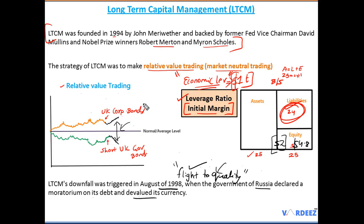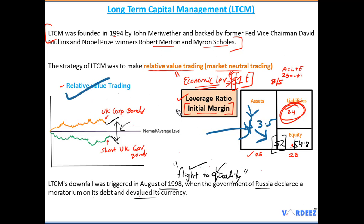The losses of LTCM spilled over into broader US financial markets, nearly causing a systemic crash. To prevent further losses, a group of banks injected $3.5 billion in equity. Notably, the banks that took over LTCM made a great deal of money from those same trades once conditions stabilized. The trades based on the models were not fundamentally wrong — the timing of the crisis event was what caused LTCM's downfall, but the banks that took over profited handsomely.